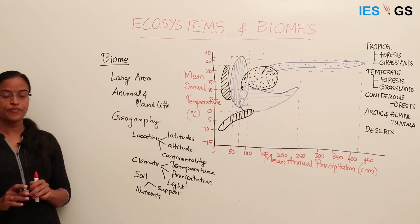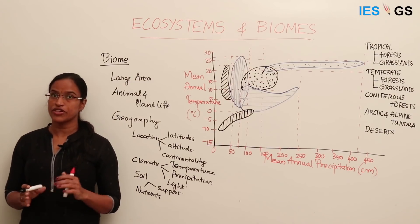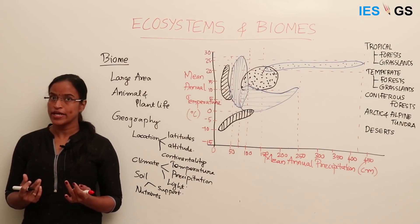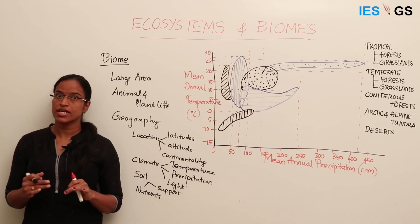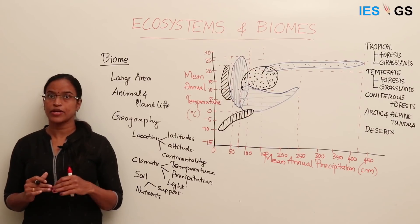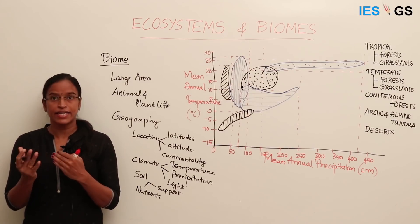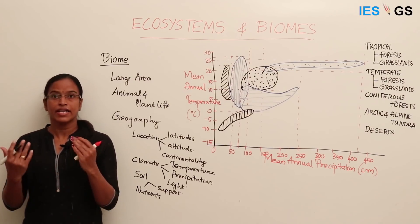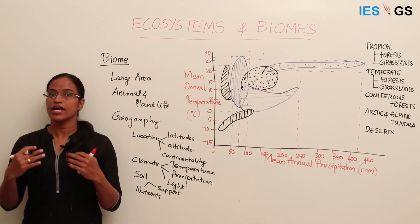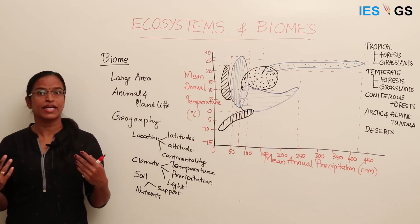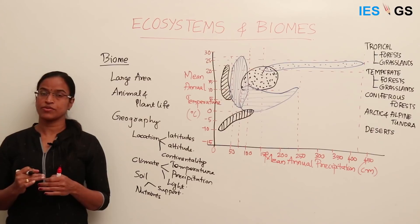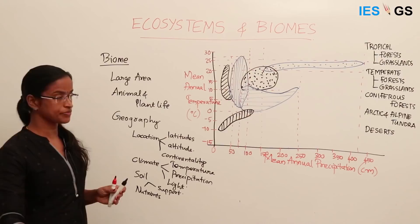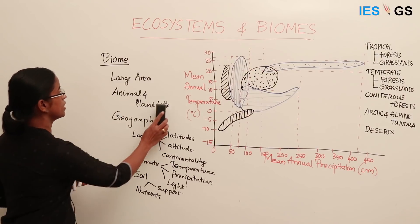There is a relation between different physical and biological factors. If you understand this relation well, you will be able to answer many questions in the examination, because they will generally ask about these interconnections — how climatic factors affect plant life, how plant life affects animal life, and how these determine the overall characteristics of an ecosystem or biome. Now let us see the different biomes available on earth.